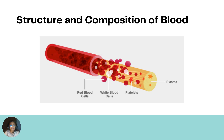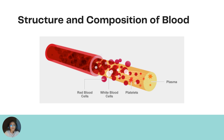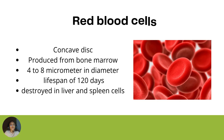Blood cells are either red blood cells or white blood cells. Red blood cells are basically biconcave in shape, meaning the center of the cell is slightly thinner than its edge, which increases the surface area to volume ratio. They are produced by bone marrow, have a lifespan of about 120 days, are destroyed in the spleen and liver when worn out, and are extremely small — four to eight micrometers in diameter.